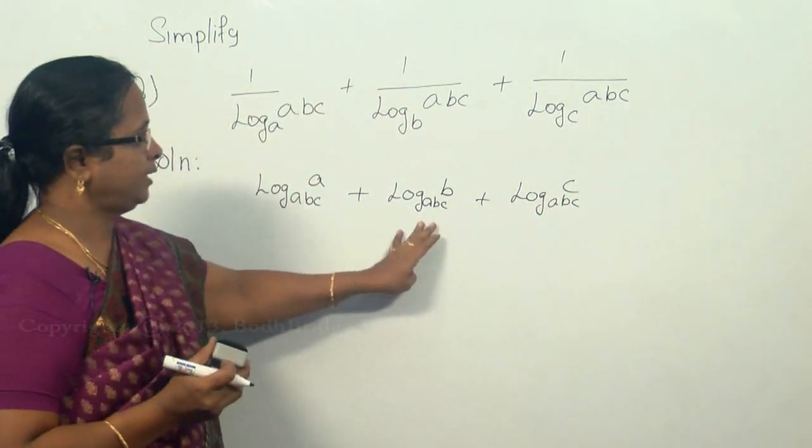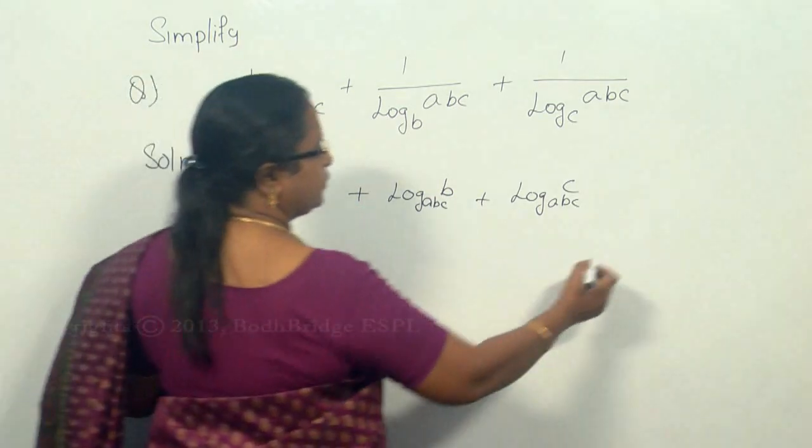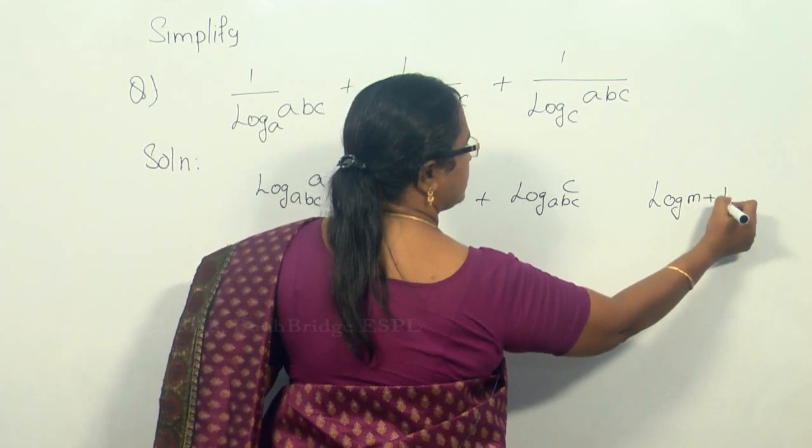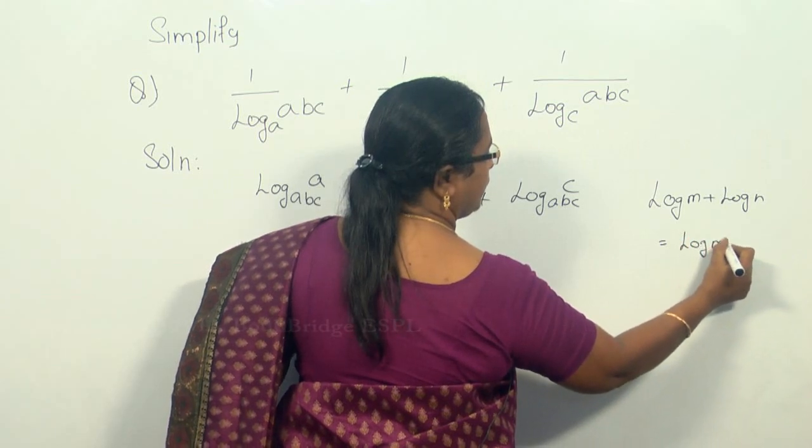Now that the bases are same and this is in the plus sign, so we can combine. As you know the rule of log m plus log n equals log mn.